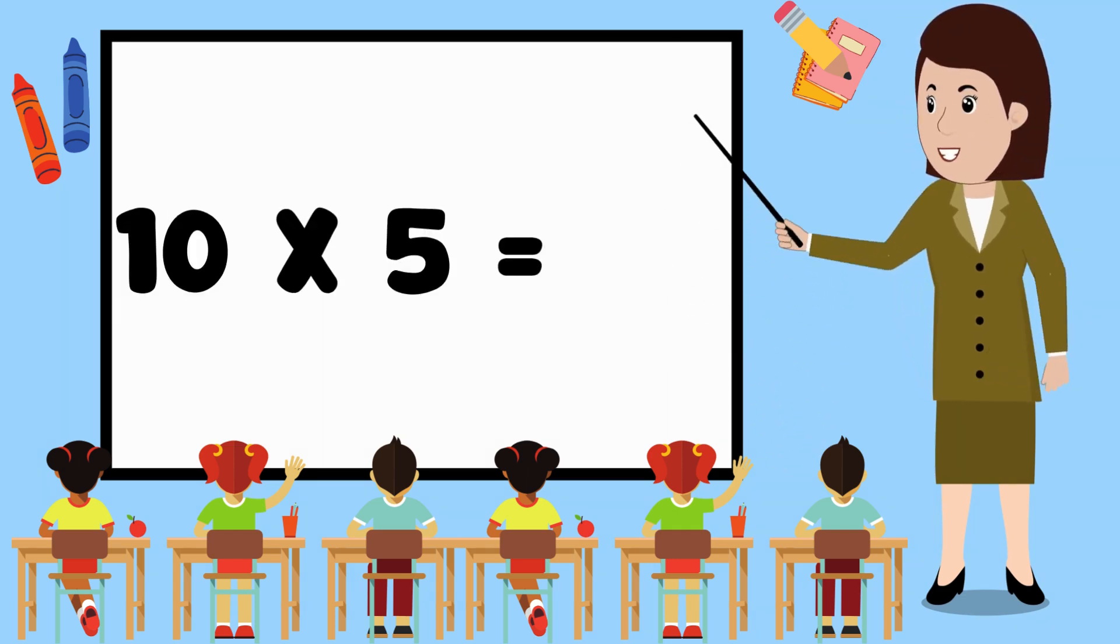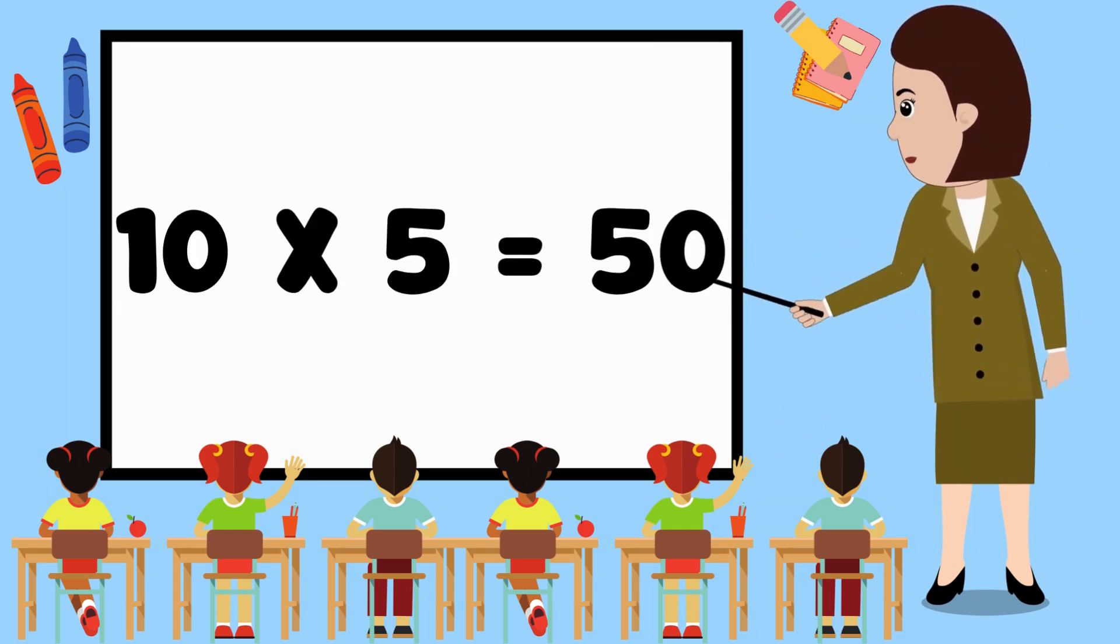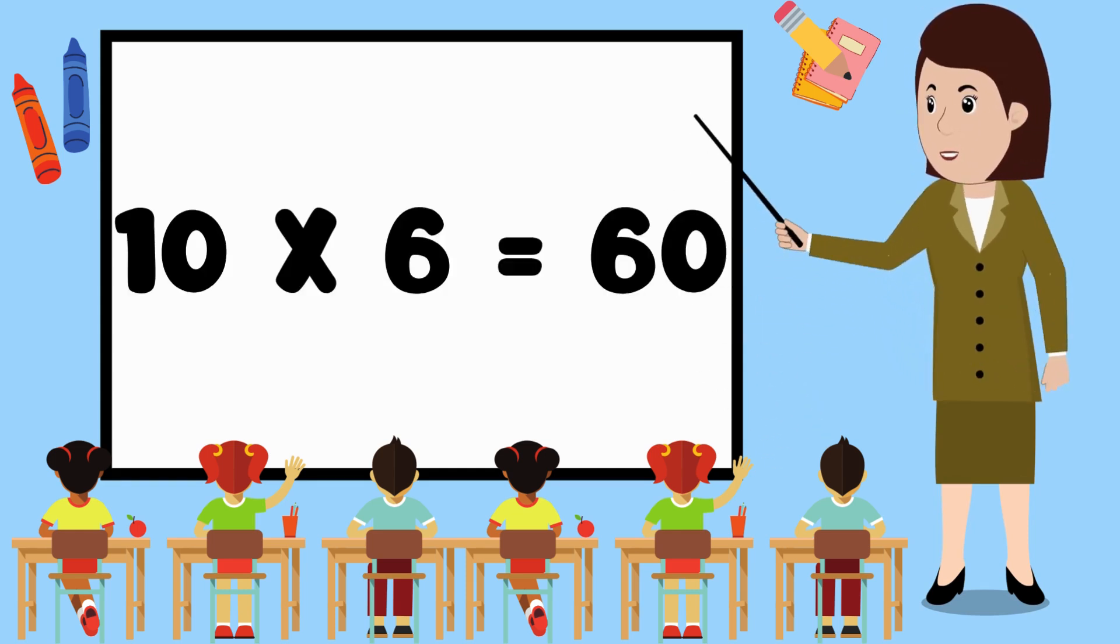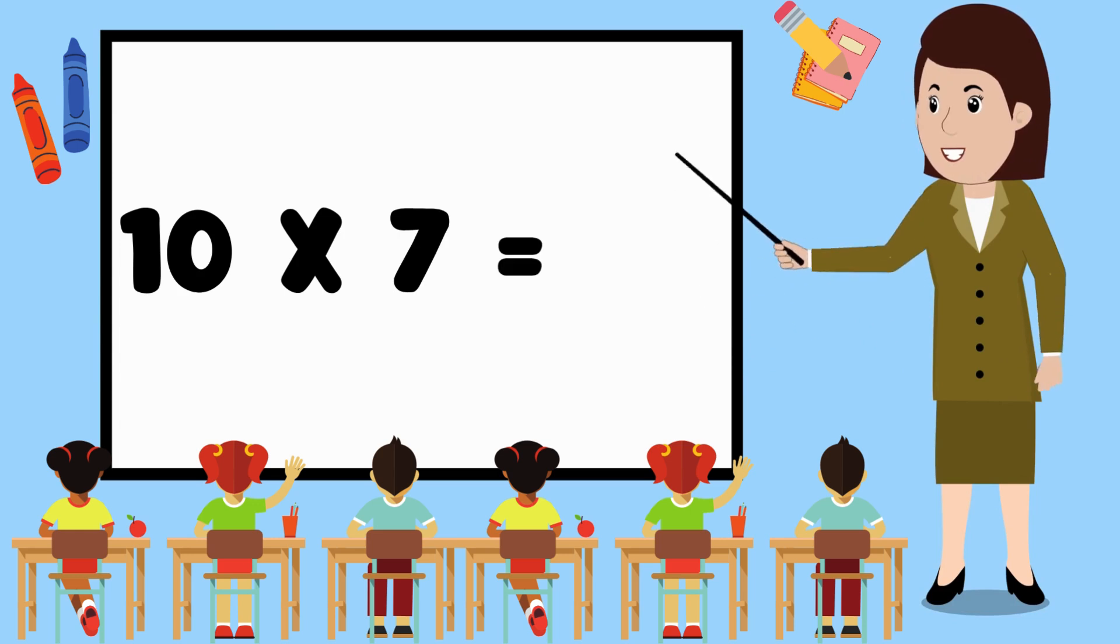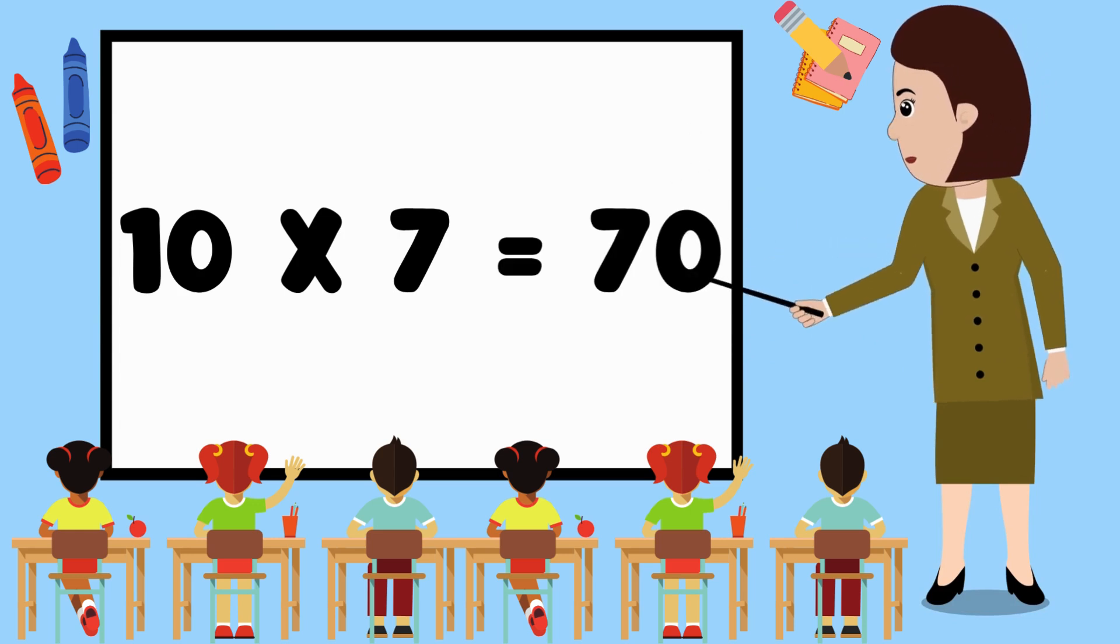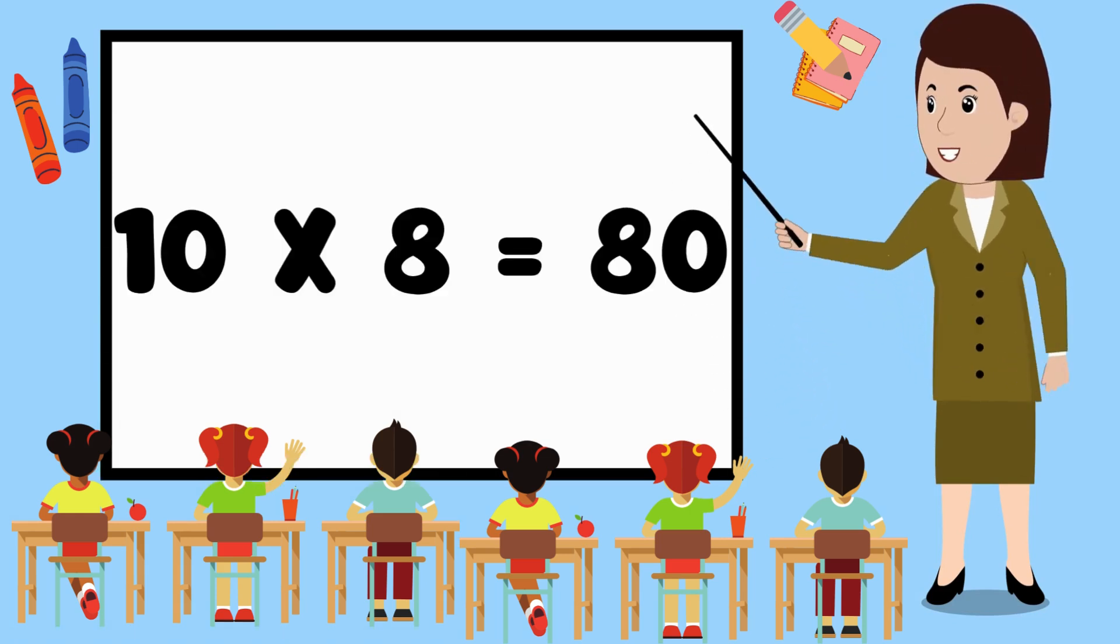10 fives are 50. 10 fives are 50. 10 sixes are 60. 10 sevens are 70. 10 sevens are 70. 10 eights are 80.